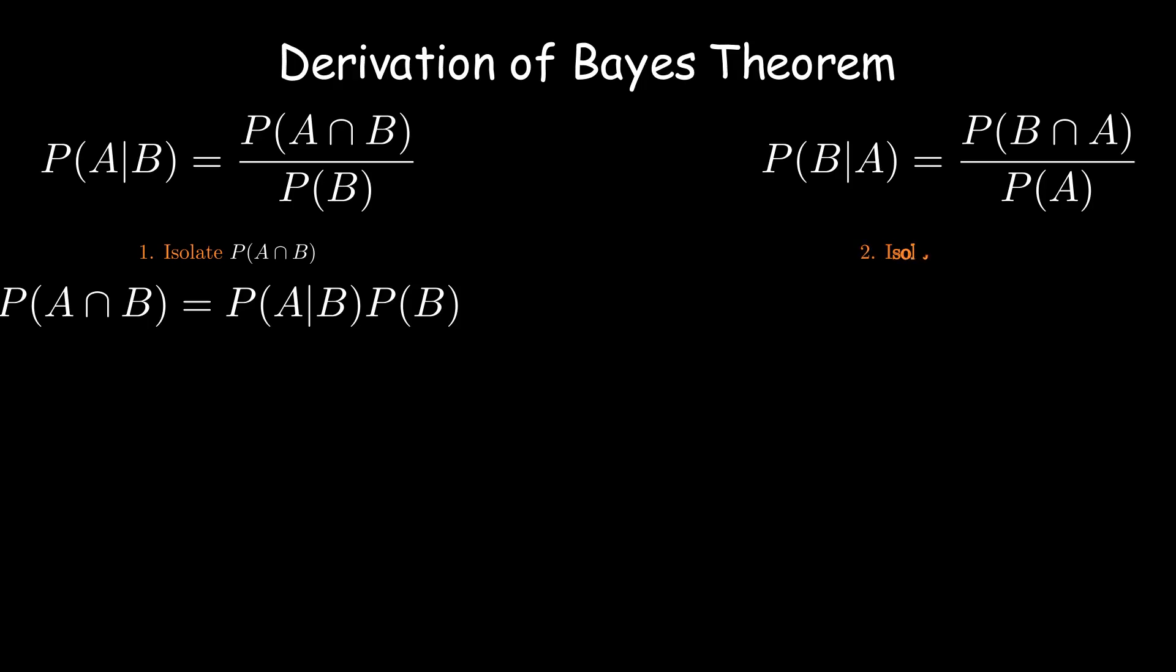Similarly, if we isolate P of B intersection A in the second equation by multiplying both sides by P of A, we get equation like this.